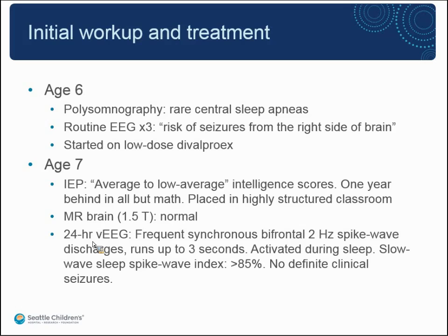He had a polysomnography which showed rare central sleep apneas, and three routine EEGs apparently showing 'risk of seizures coming from the right side of the brain.' He started on a low dose of divalproex. At age seven his IEP showed average to low-average intelligence scores, one year behind in all subjects except math, placed in a highly structured classroom. Brain MRI at 1.5T was normal. A 24-hour video EEG had frequent synchronous bifrontal 2 Hz spike-wave discharges; during sleep these became nearly continuous, occupying greater than 85% of his slow-wave sleep. Interestingly, the overnight EEG showed no seizures despite frequent nocturnal arousals.